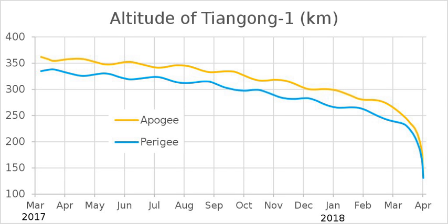The coming together of two binary stars when they lose energy and approach each other constitutes a stellar collision. Several things can cause the loss of energy, including tidal forces, mass transfer, and gravitational radiation. The stars describe the path of a spiral as they approach each other, and this sometimes results in a merger of the two stars or the creation of a black hole. In the latter case, the last several revolutions of the stars around each other take only a few seconds.